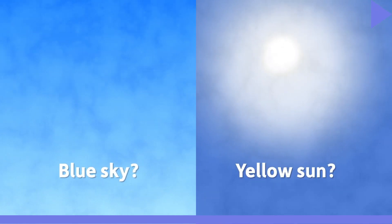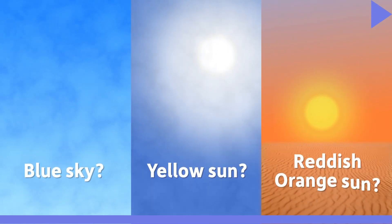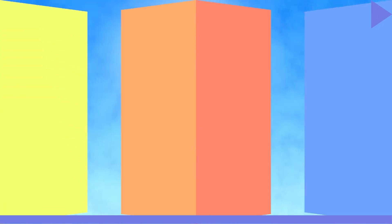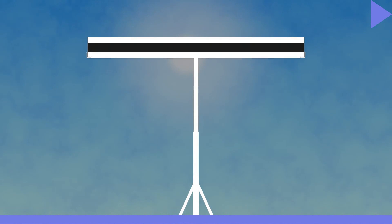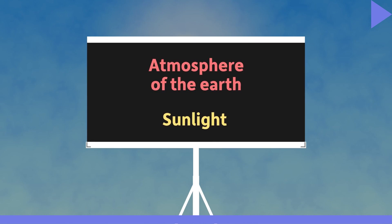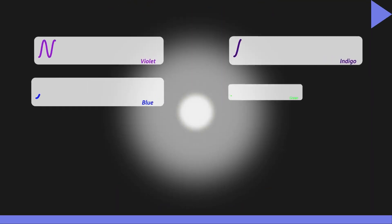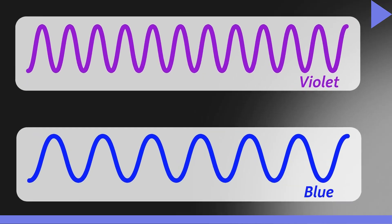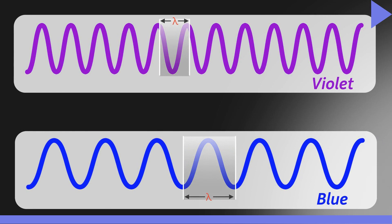Some common questions kids ask are: Why is the sky blue while the clouds aren't? Why is the sun yellow, and why does it turn reddish-orange during sunrise and sunset? The physics behind them is not difficult. The white light coming from the sun is a mixture of seven primary colours, and each coloured light has a corresponding frequency and wavelength associated with it.